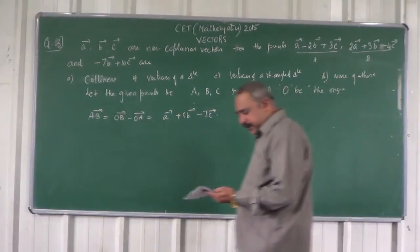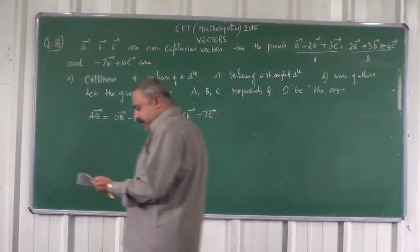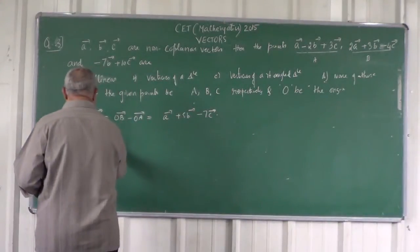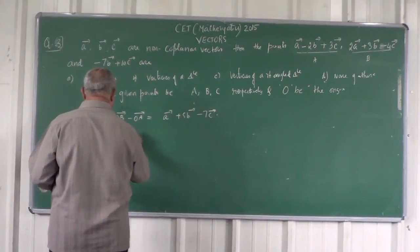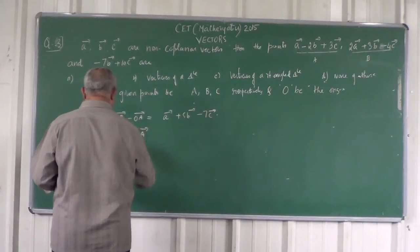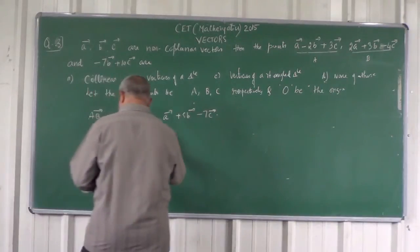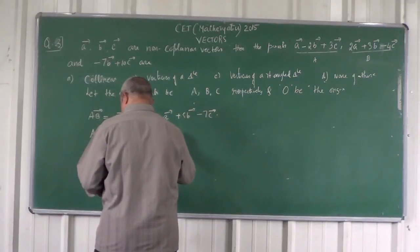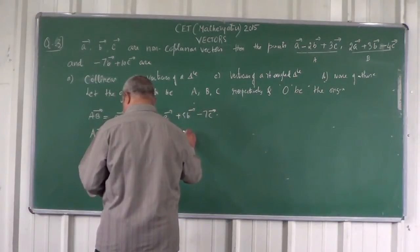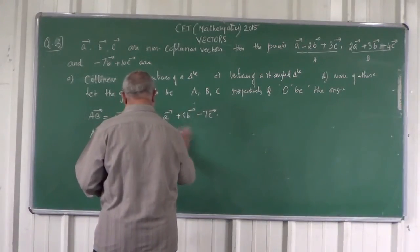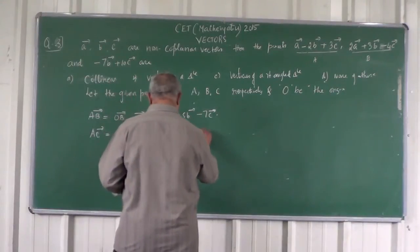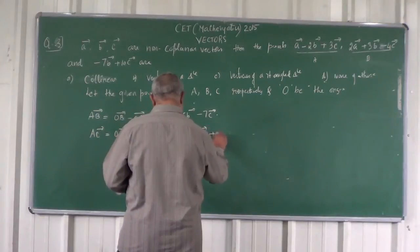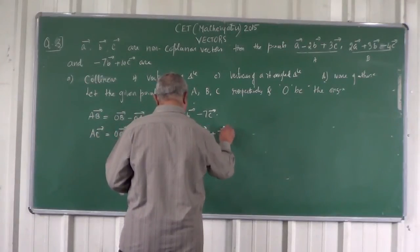Similarly, find vector AC. Vector AC is OC minus OA. Subtracting, the answer is: vector AC = minus A minus 5B plus 7C.